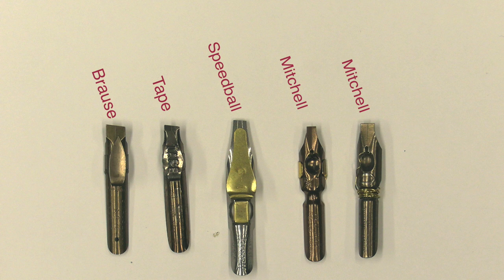Lastly, there's a Mitchell nib with a homemade reservoir on it, which we'll talk about also.